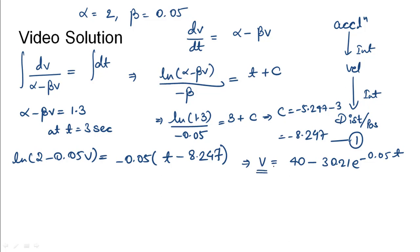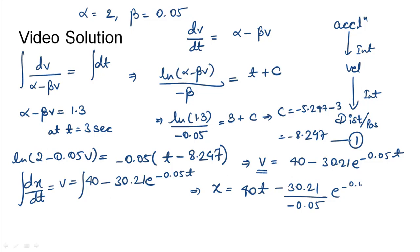Now we know the expression of v, so we will integrate this and obtain position. Let us call this dx by dt equals v which is equal to 40 minus 30.21 e power minus 0.05 t. Let us integrate this. We would get x equals 40 times of t minus 30.21 divided by minus of 0.05 e power minus 0.05 t plus some constant c dash.